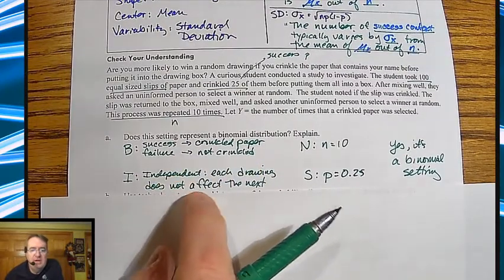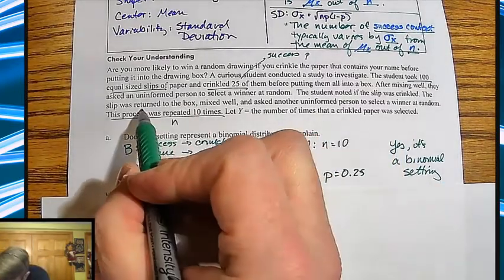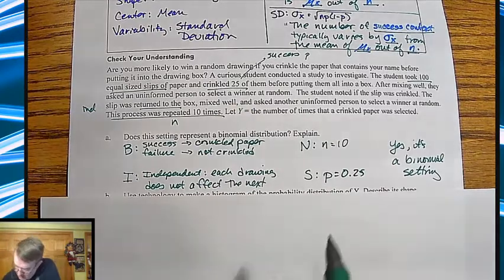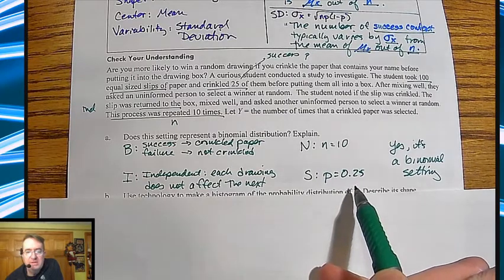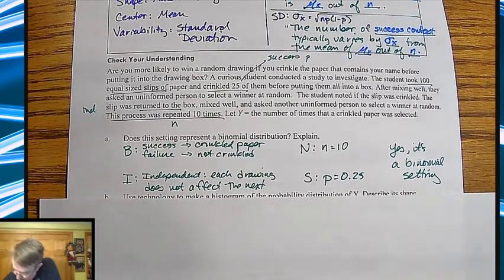Trying to save yourself some heartache here. I, independent. Each drawing does not affect the next. And we know that because it is returned to the box. So that's my independence. Okay? N is 10. That's fixed. And your probability is staying the same at 25%. So yes, it's a binomial setting.